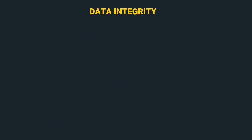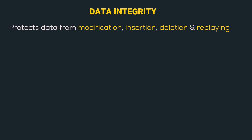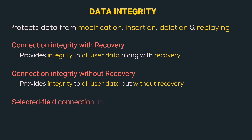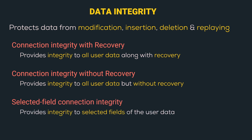The next is Data Integrity. Here, the service protects data from modification, insertion, deletion, and replaying. The first type is Connection Integrity with Recovery, which provides integrity to all users along with recovery options. The second is Connection Integrity without Recovery — same as previous but without recovery options. The third is Selected Field Connection Integrity, which provides integrity to selected fields of the user data.